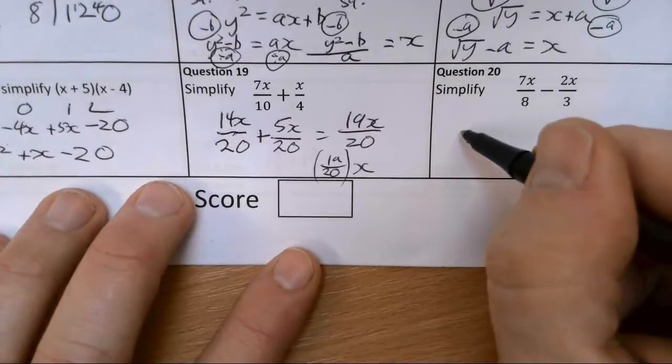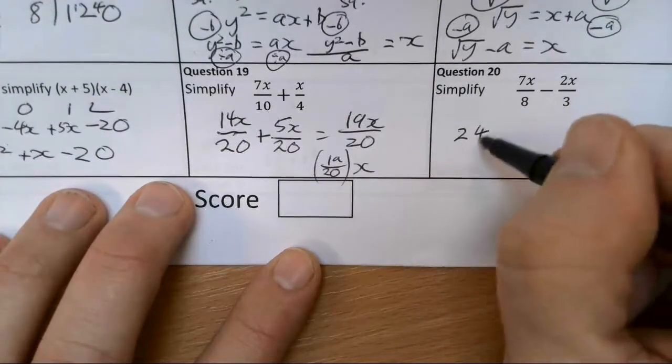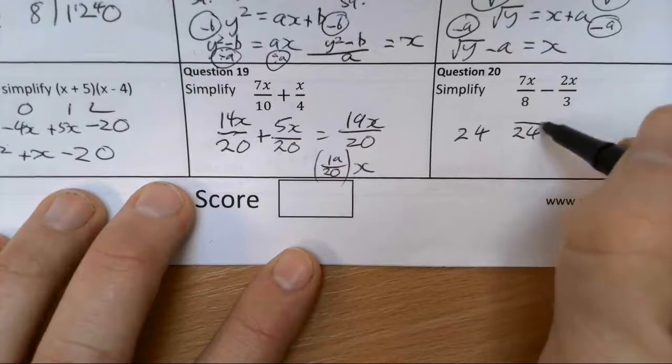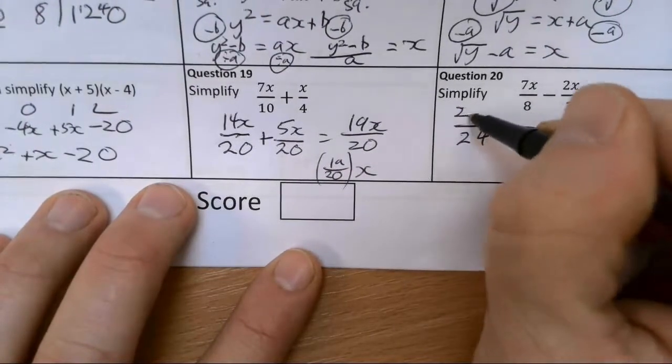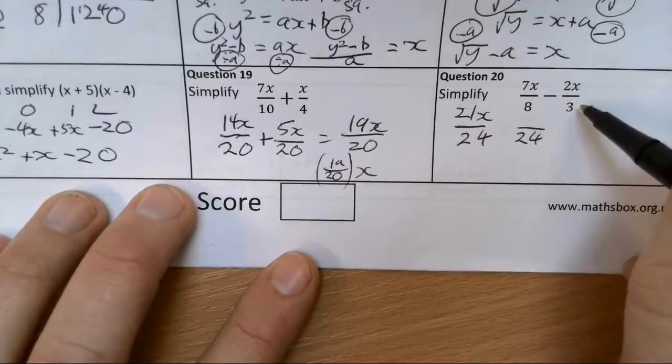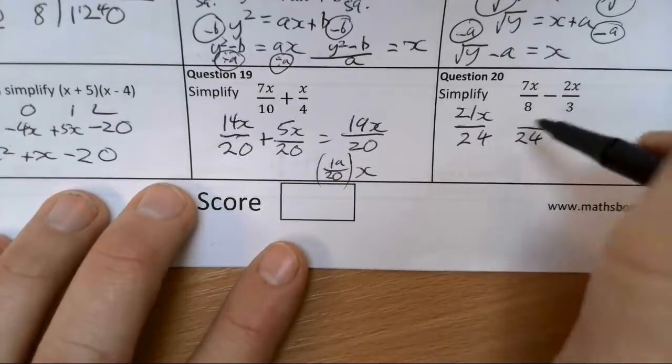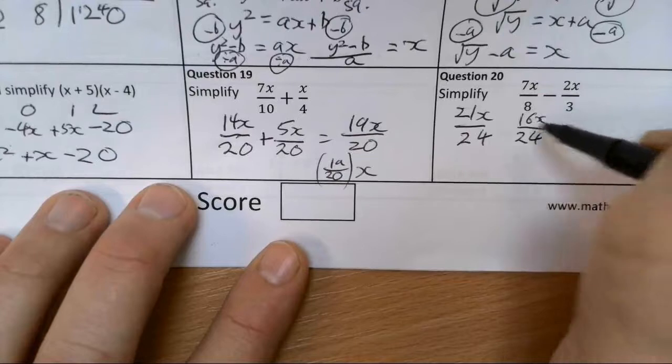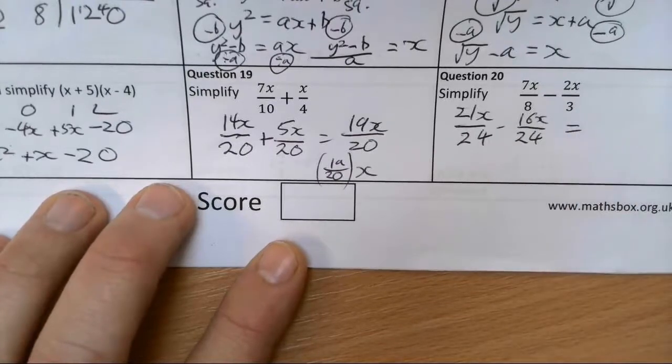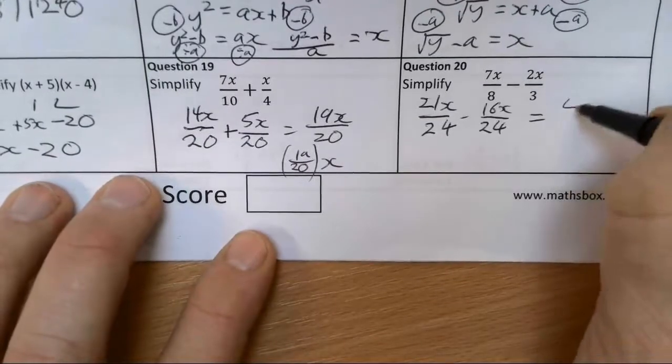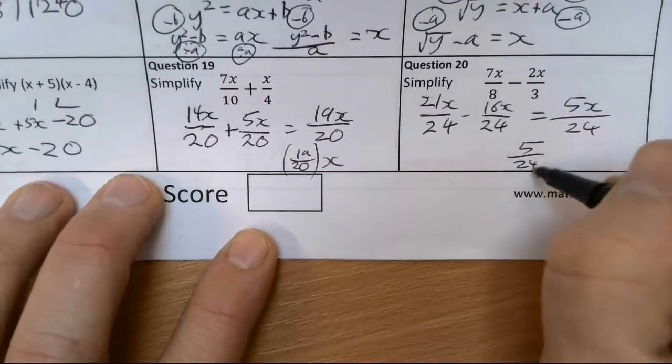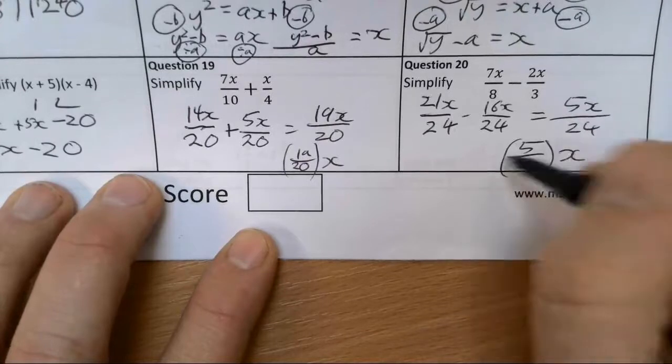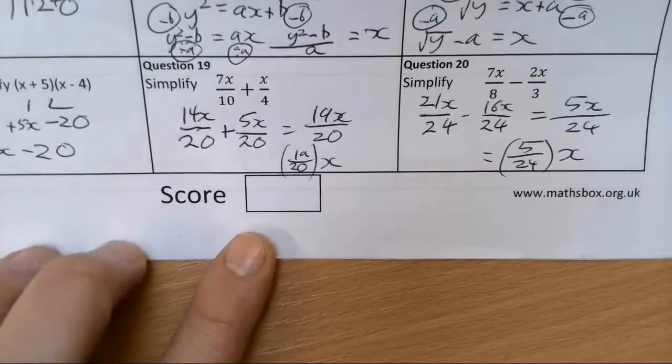We want lowest common multiple of 8 and 3 as a denominator. So we're going to go for 24. That's times by 3, tops times by 3, we've got 21x. That's times by 8, tops times by 8, we've got 16x. So we're going to go 21x take away 16x, which is 5x over 24, which is the same as 5 twenty-fourths of x if you want to have it like that.